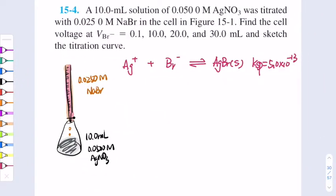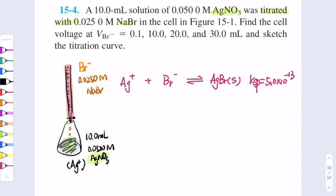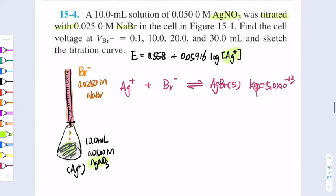In this video I'll explain the second situation we discussed during the lecture. Silver nitrate is being titrated with sodium bromide. In the flask you have silver ion, and in the burette you have bromide ion. For a precipitation titration, the equation we always use to calculate the potential is E = 0.558 + 0.05916·log[Ag⁺]. Throughout the whole titration, we are tracking the concentration of silver ion.